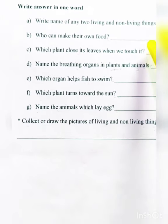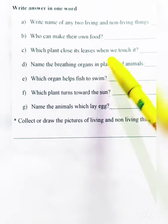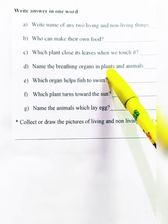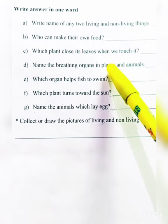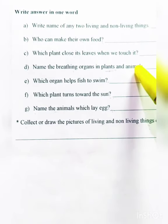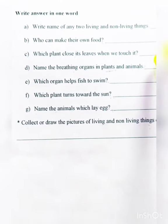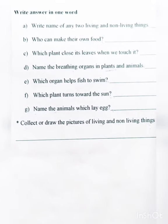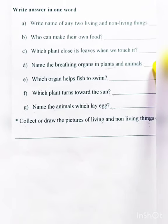Name the breathing organs in plants and animals. The breathing organ of a plant is called stomata. Stomata releases oxygen after photosynthesis. For animals, the breathing organs are different depending on the animal. For example, fish have gills, while mosquitoes and cockroaches have air holes in their bodies.